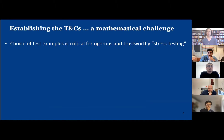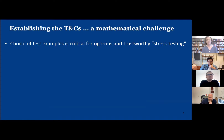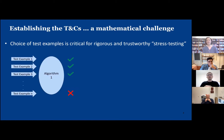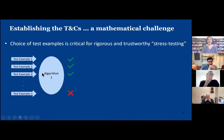I've been trying to essentially attach a warning label to algorithms that says: this algorithm should only be used for the scenarios most similar to those described in the terms and conditions which establish its guaranteed reliability. I'd like us to know when each algorithm is fit for purpose — under what conditions can we expect an algorithm to perform well. Establishing those terms and conditions is really a mathematical challenge. The choice of test examples is really critical if we're going to have trustworthy algorithms. How do we stress test an algorithm to make sure that we can trust the conclusions?